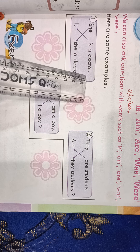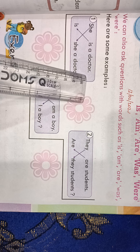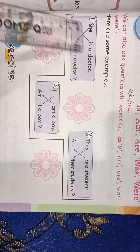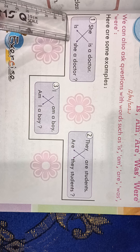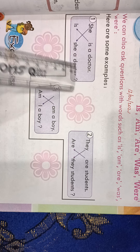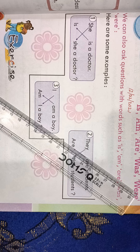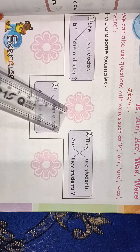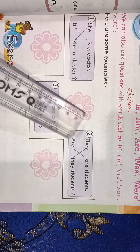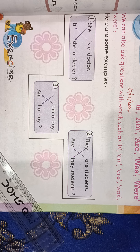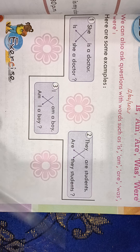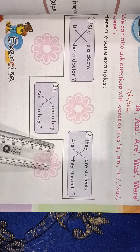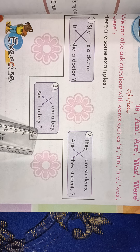Here are some examples. Number 1: She is a doctor. — Is she a doctor? Number 2: They are students. — Are they students? Number 3: I am a boy. — Am I a boy?